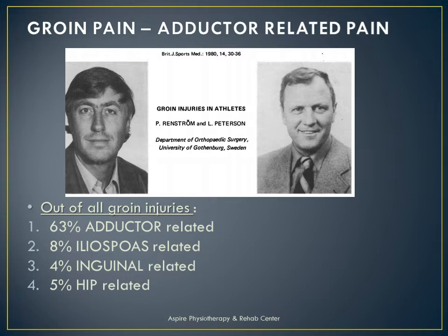If we look at the history of groin pain research, Penstrom and Peterson published their article in the British Journal of Sports Medicine in 1980 about groin injuries, and they found that out of all groin injuries, 63% were adductor related, 8% iliopsoas related, 4% inguinal, and 5% hip related. So whatever I am discussing is all about adductor related groin pain, because covering every injury in one or two videos is impossible. I will make another video for different kinds of injuries.